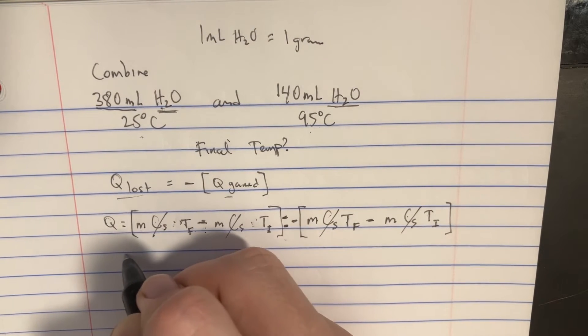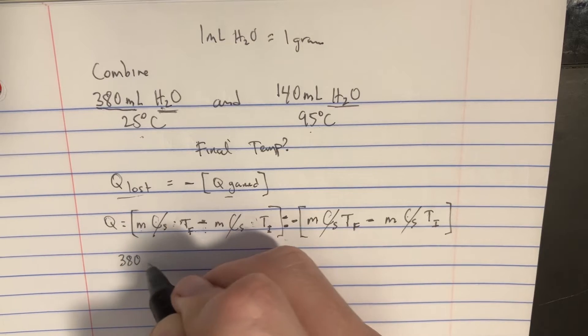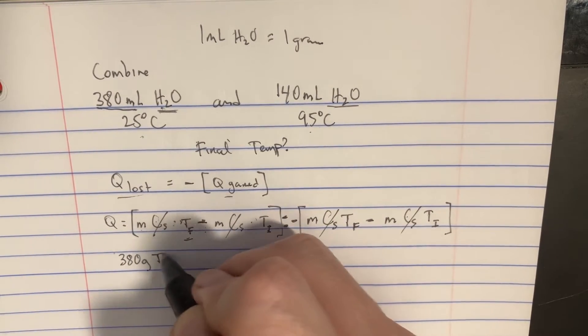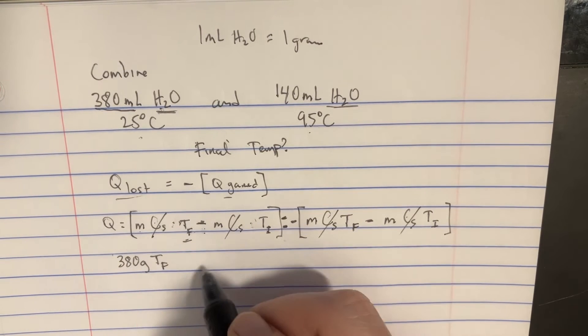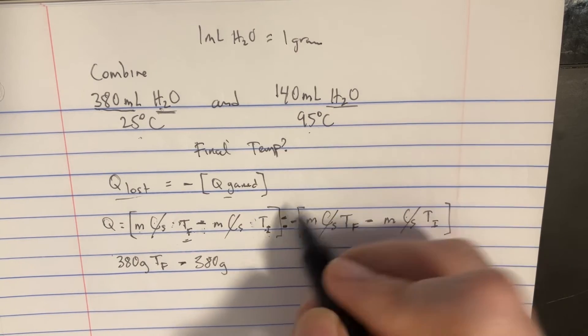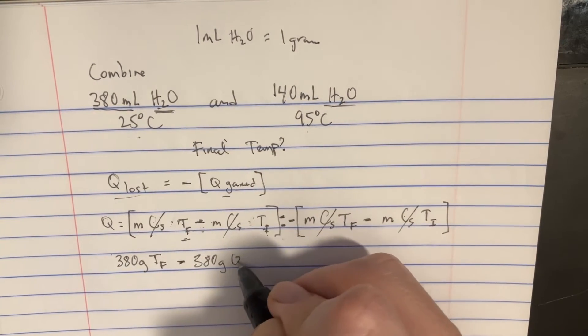So let's start with 380 grams on this side. And we have the final temperature, but we don't really know the final temperature. That's kind of what we're looking for. Then we subtract, again, 380 grams, and the initial temperature is 25 on this side.